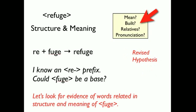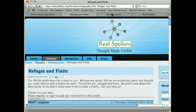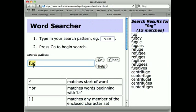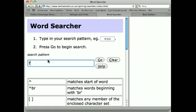One good way to do that is to go to a great site called the WordSearcher. I'm going to go over here, and what I've done here is I've typed in F-U-G. The reason I didn't type an E there is because I want to make sure that I don't miss words that take on a vowel suffix that replace an E.